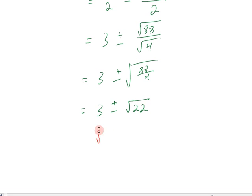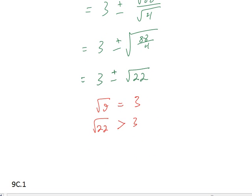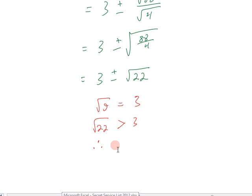But we do know that the square root of 9 is equal to 3. And if the square root of 9 is equal to 3, then the square root of 22 ought to be greater than 3. And if the square root of 22 is greater than 3, then we can say that 3 take away the square root of 22 is negative.